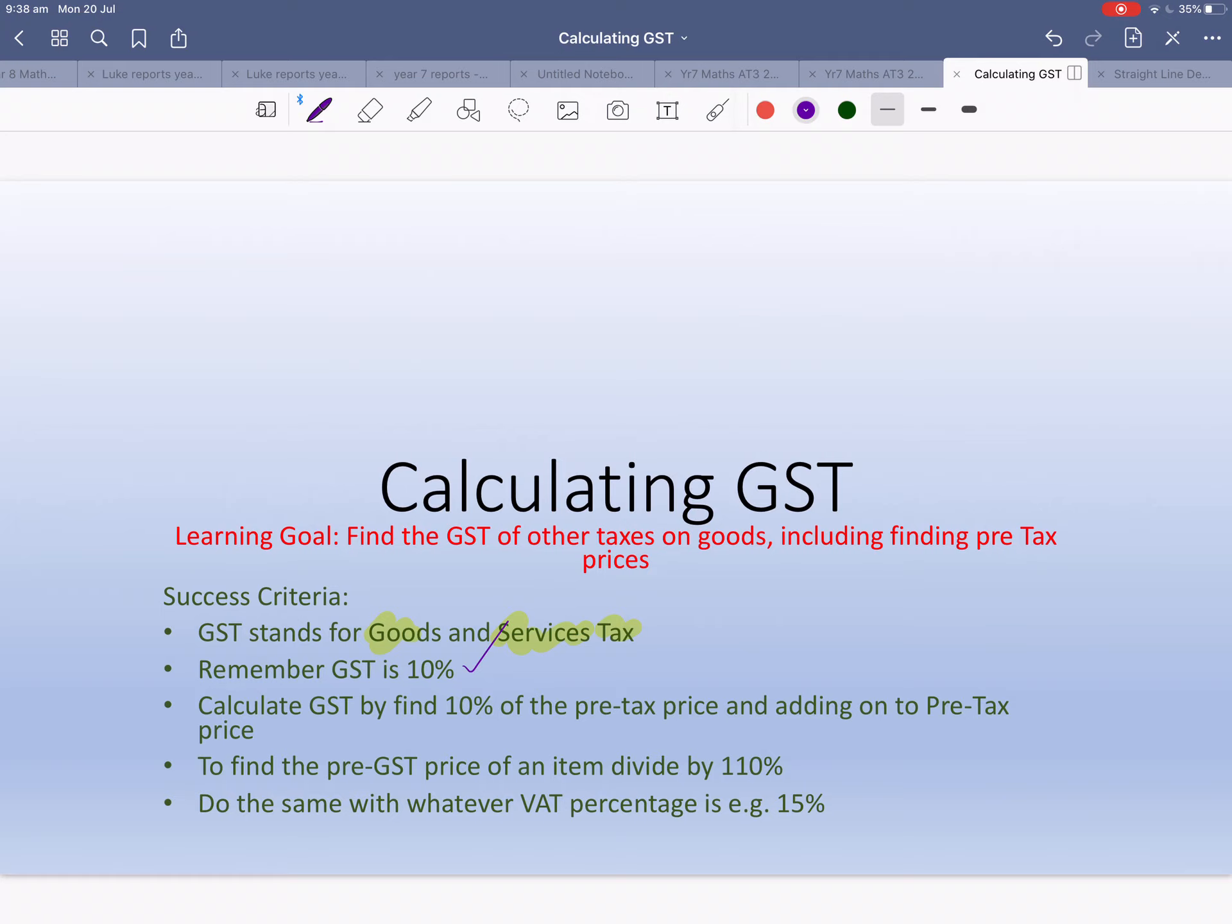We calculate the GST by finding 10% of the pre-tax price. Really important: whenever we go to the shop it's the law that we have to see the post-GST price, so the total amount we pay out. To find the pre-GST price, divide by 110%.